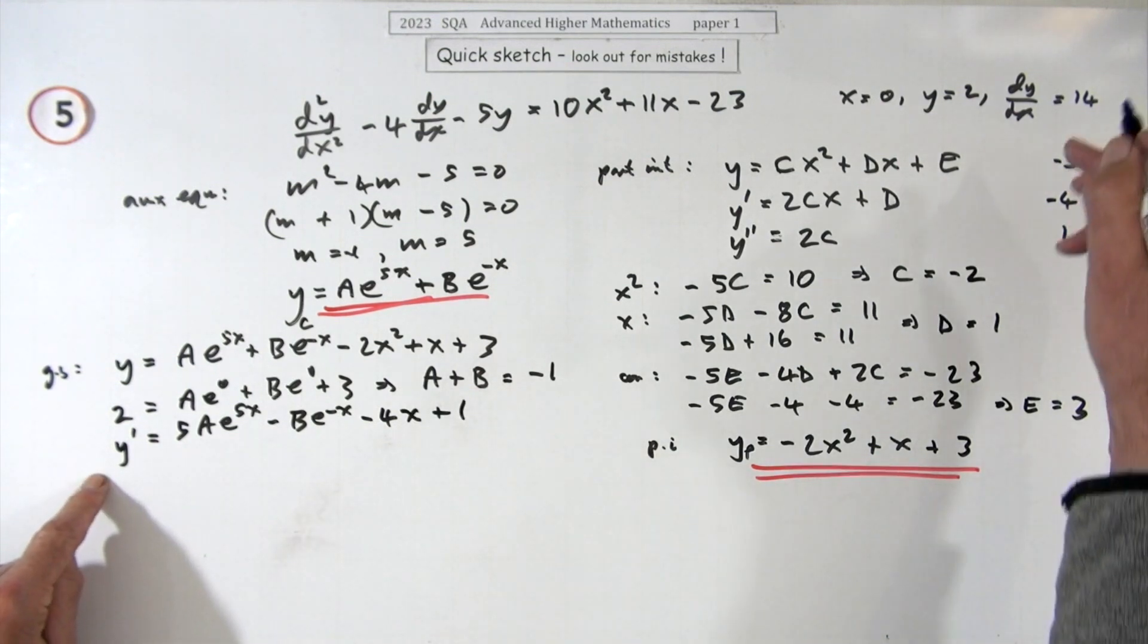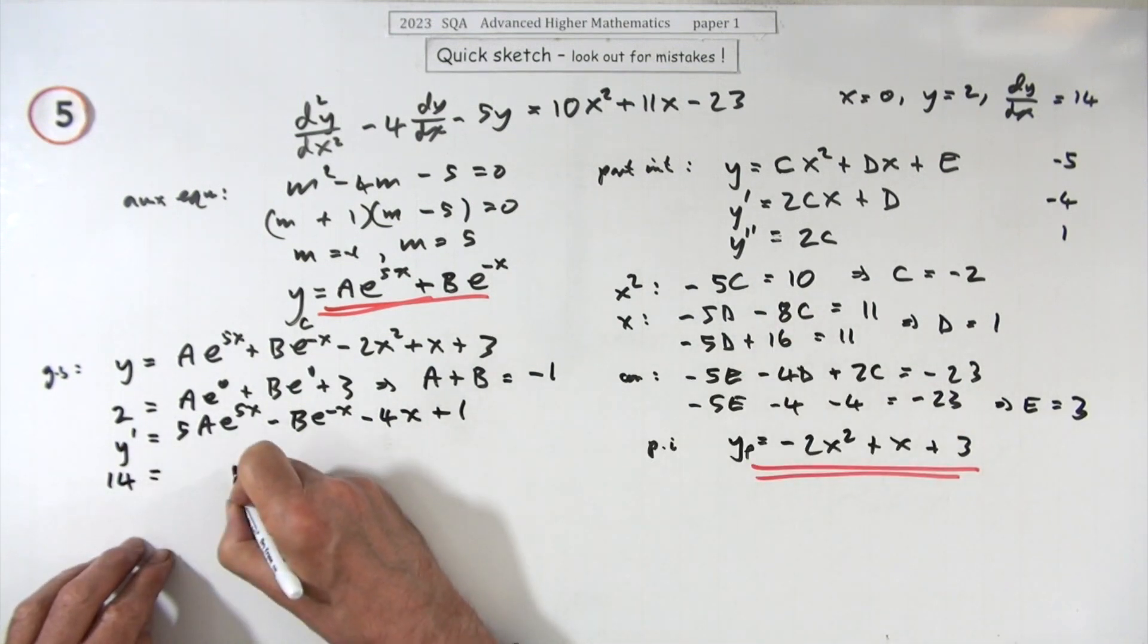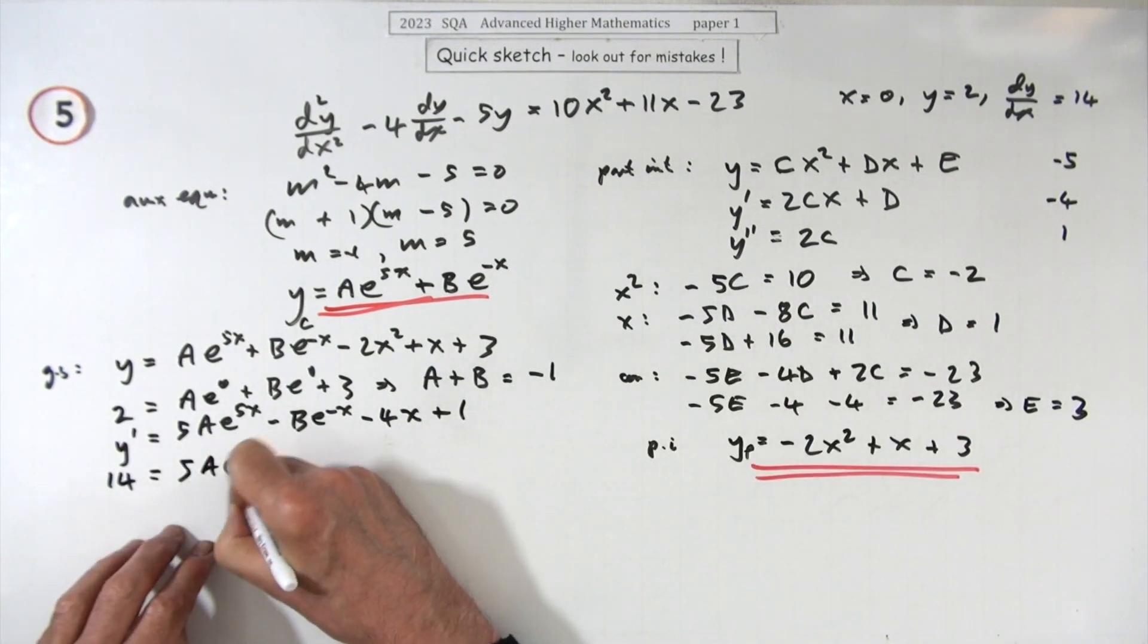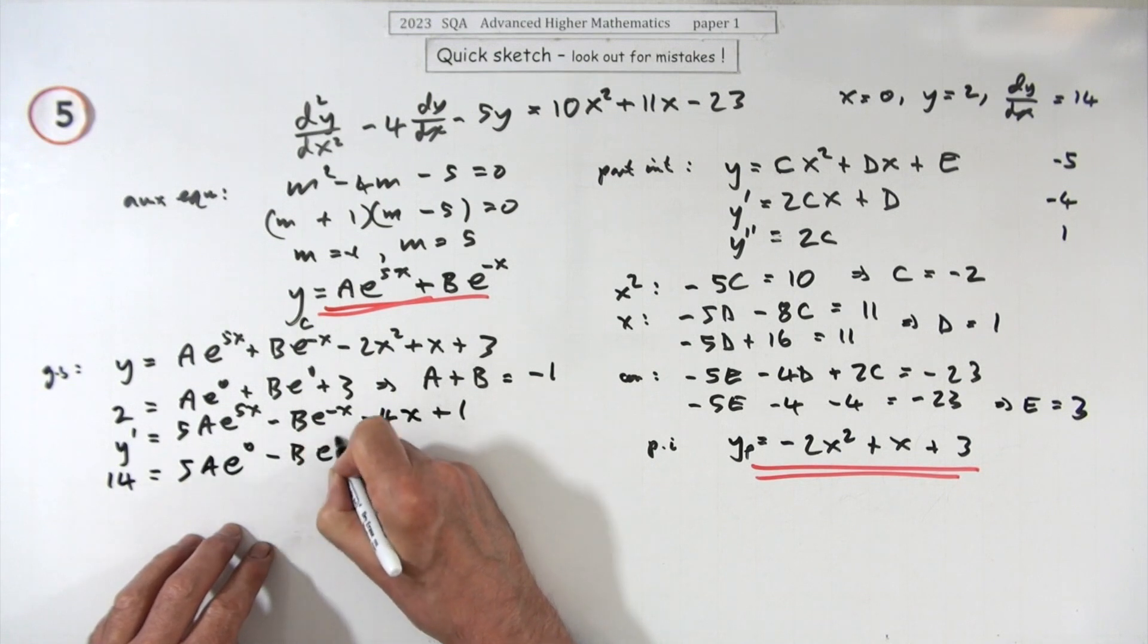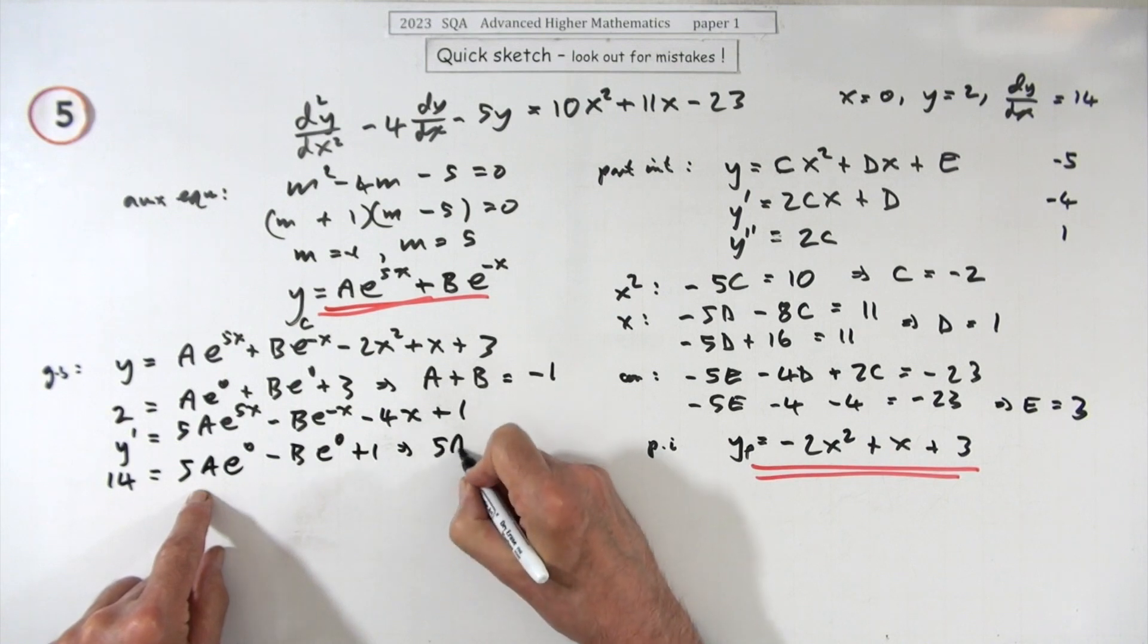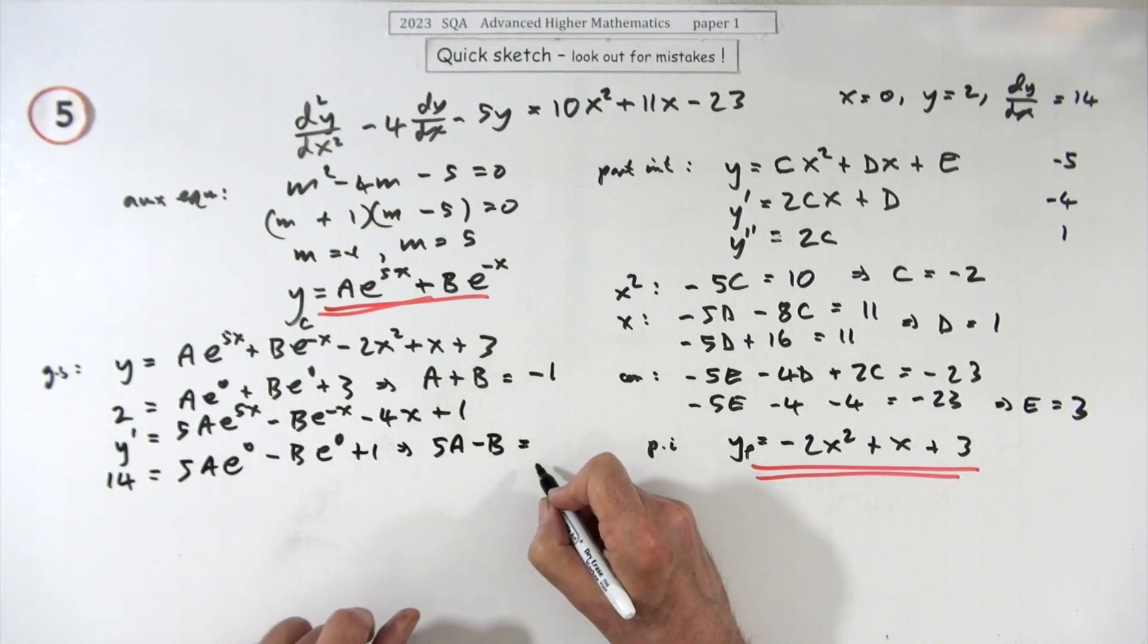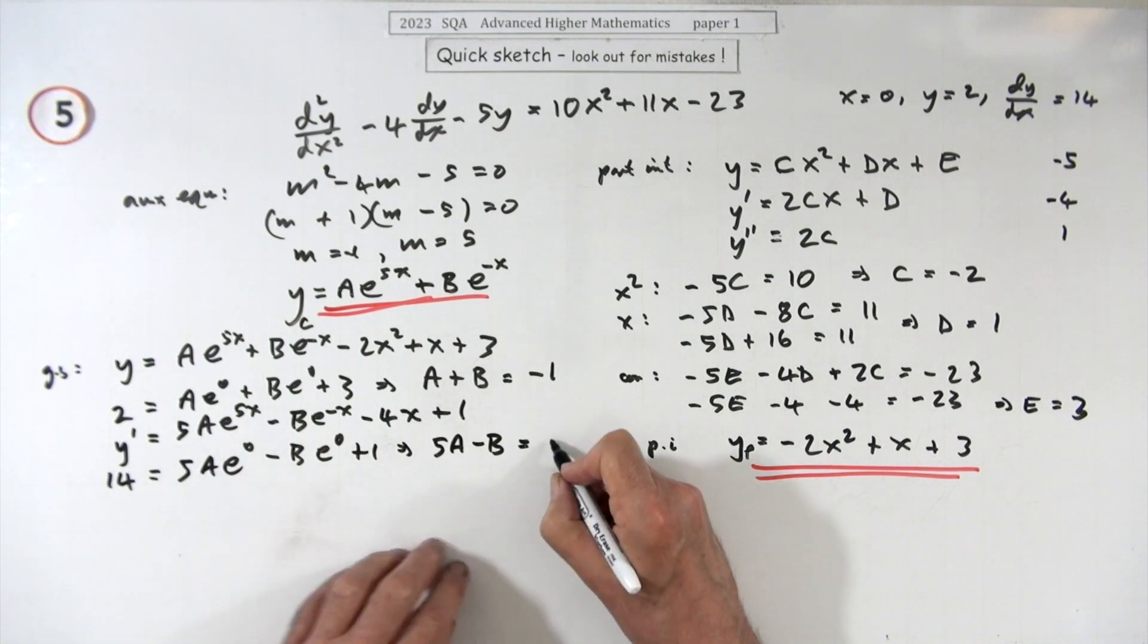Now putting in the values from here, what were they, 14 when x is 0. So that's 5a e to the 0 minus b e to the 0 plus 1. So that gives me another connection, 5a minus b comes to, take that one across, 13.